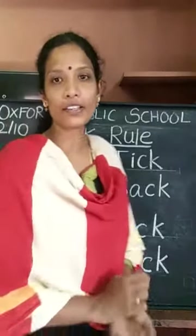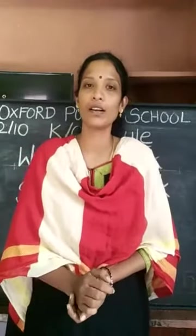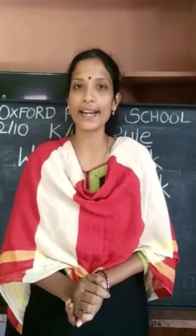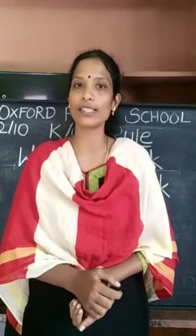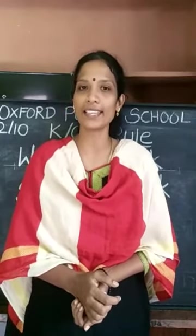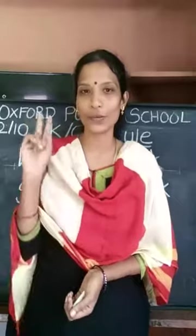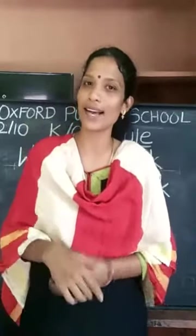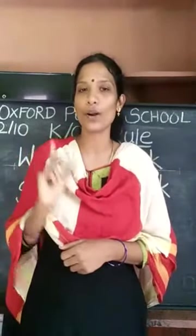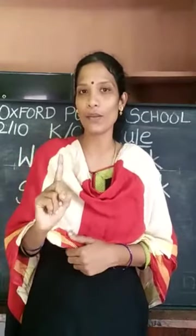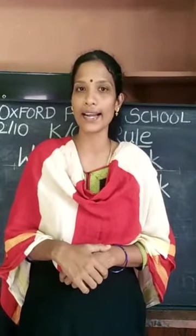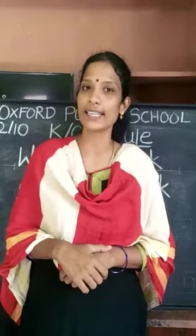I hope you all understood the concept. Children, play this video once again and read all these words using the K and CK rule. When two vowels come and end with K sound, write K. When one vowel comes and ends with K sound, write CK.